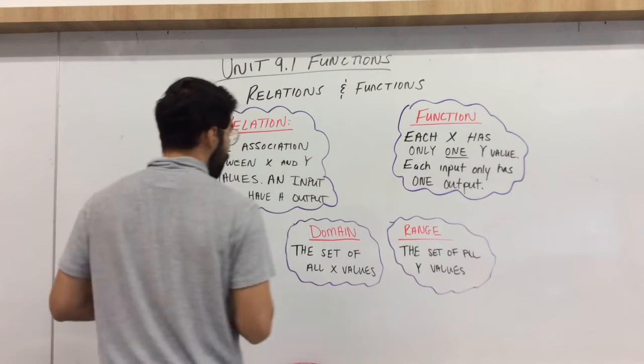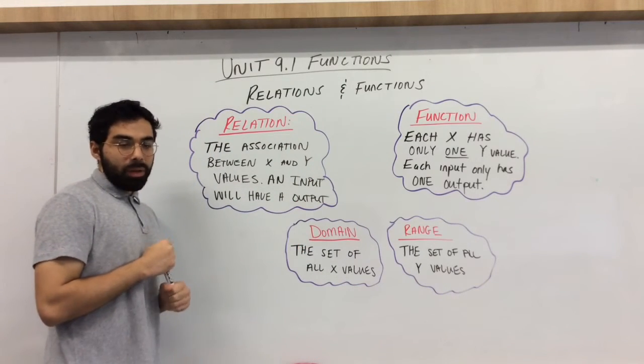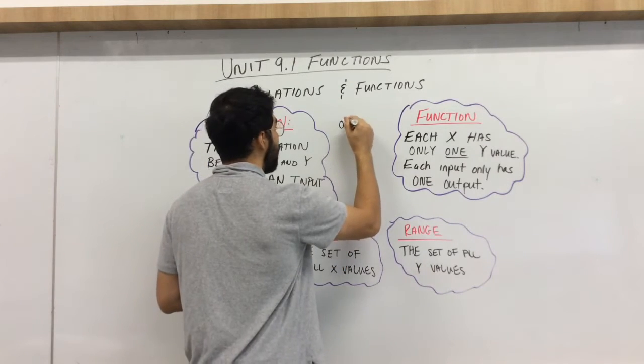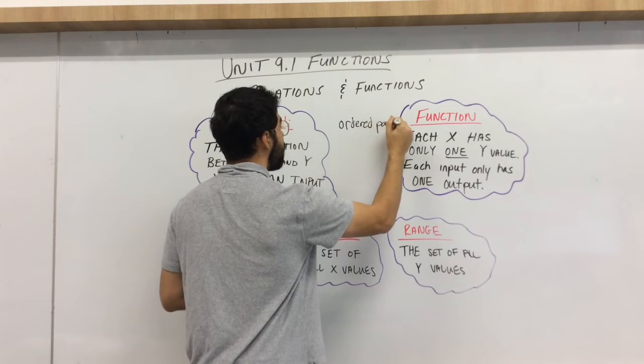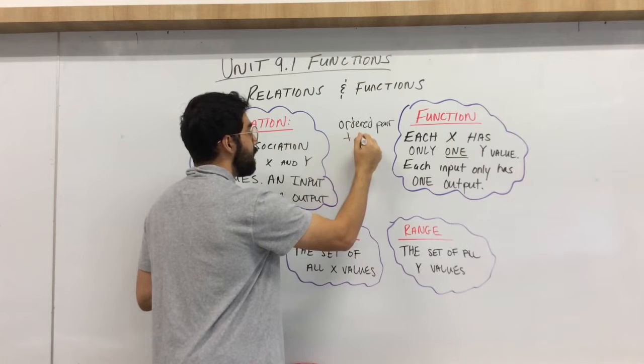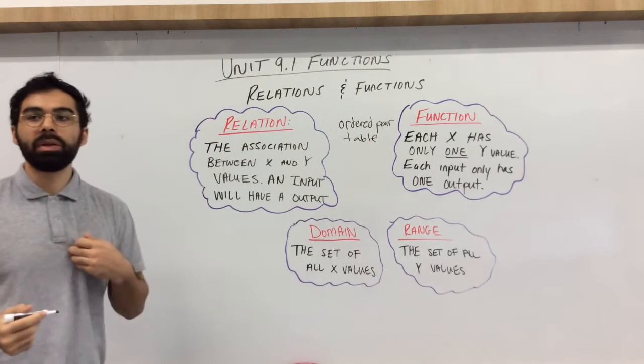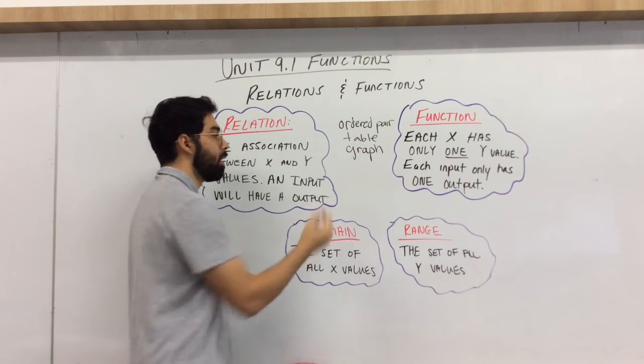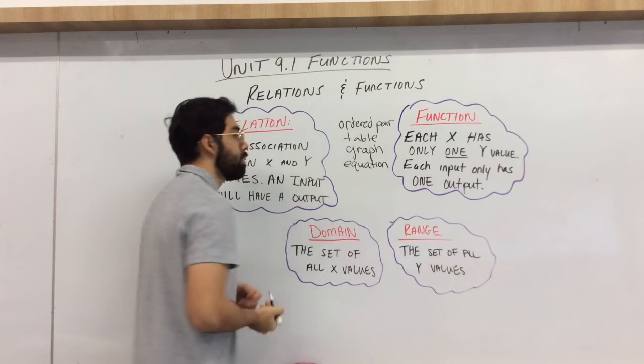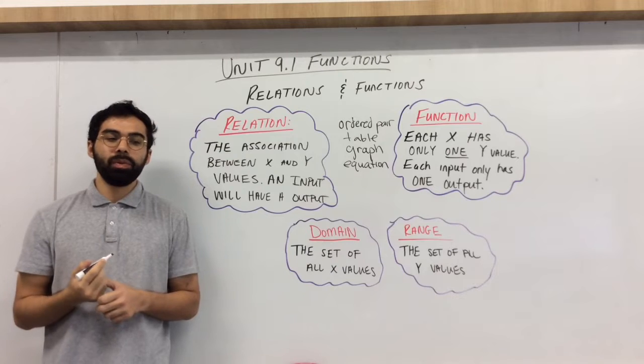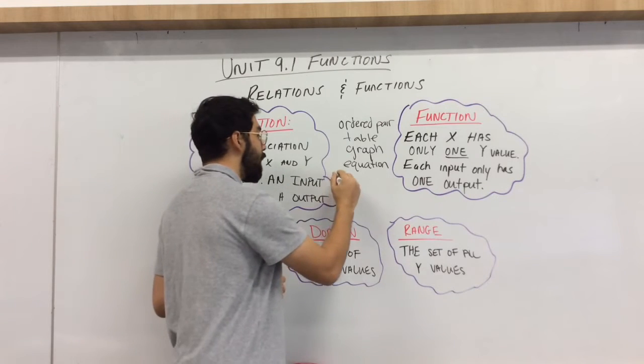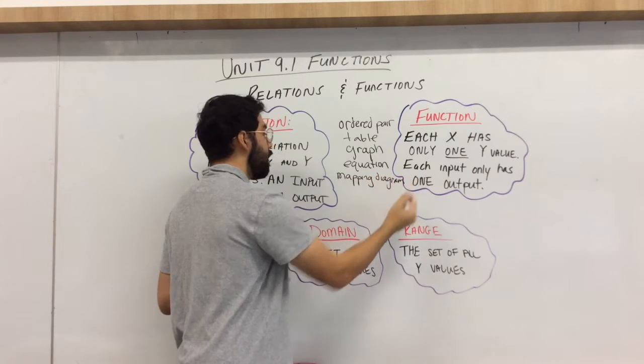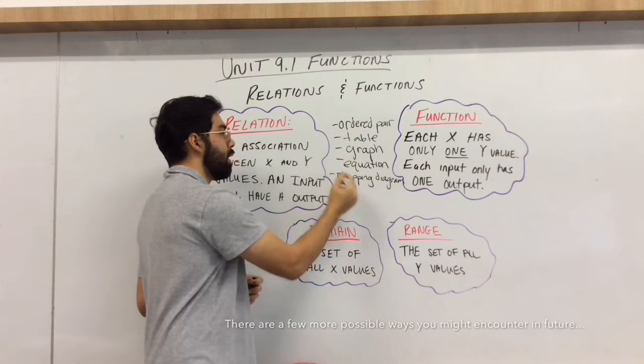Now before I give you an example, again, a relation function can be represented in many, many ways. A couple ways that you are very used to is it could be an ordered pairing. This ordered pairing could be put in a table. It could be represented in a graph. An equation could also be represented. You could also represent this in a diagram or a mapping diagram. So those are all the ways that we can represent a relation and a function.